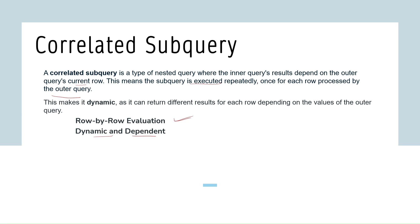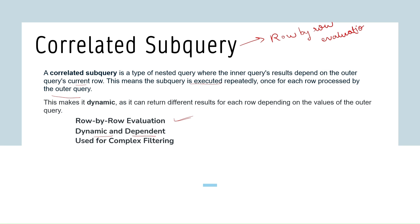The keywords to remember for correlated subqueries are row-by-row evaluation, row-specific filtering, and ranking or calculations based on related data. Correlated subqueries are used for complex filtering where the subquery needs context from the outer row.